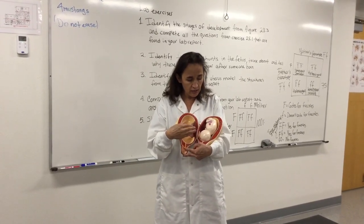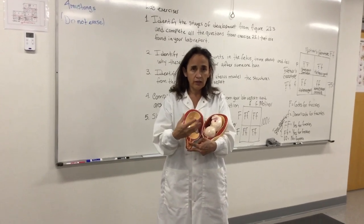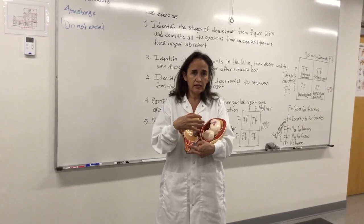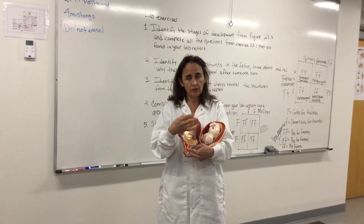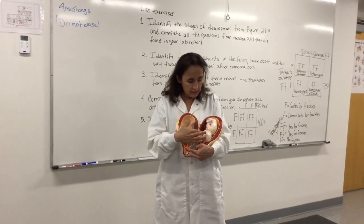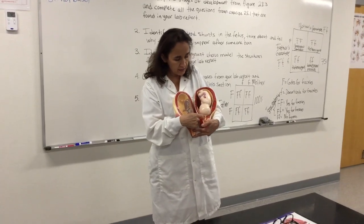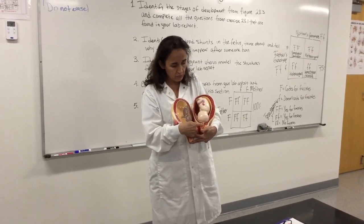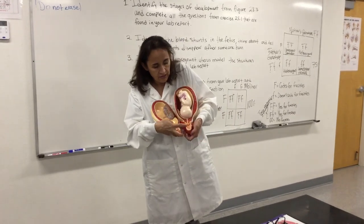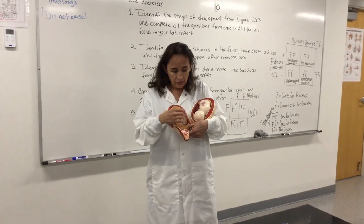You end up with the embryo with the rudimentary organs that will start growing in size during the second and third trimester, and then they will start functioning more properly. This is then the embryo with the head facing the cervical canal, which is this, and this is the vagina.